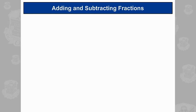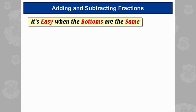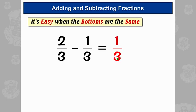Adding and subtracting fractions is dead easy when the numbers on the bottom are the same. So here for example we've got 2 thirds minus 1 third, we've got 3s on the bottom, so that's fine. We can say 2 minus 1 is 1, and then keep the number on the bottom the same, so it's 1 third.